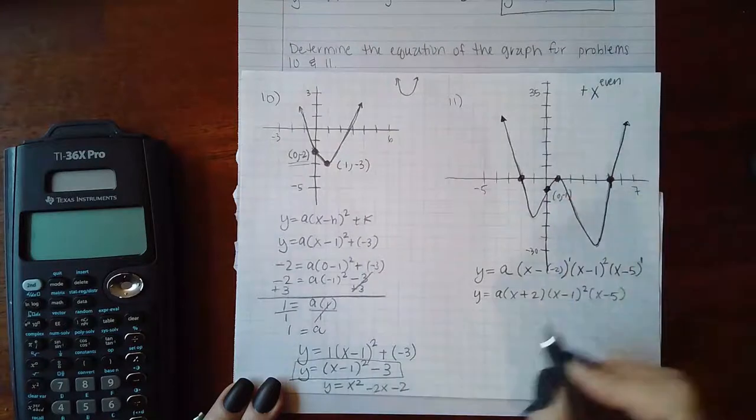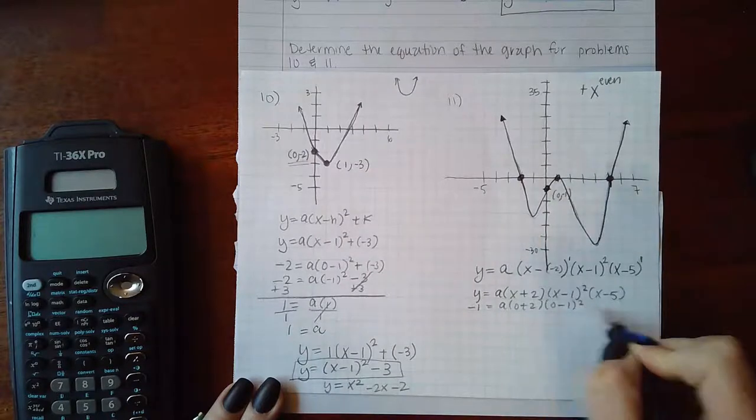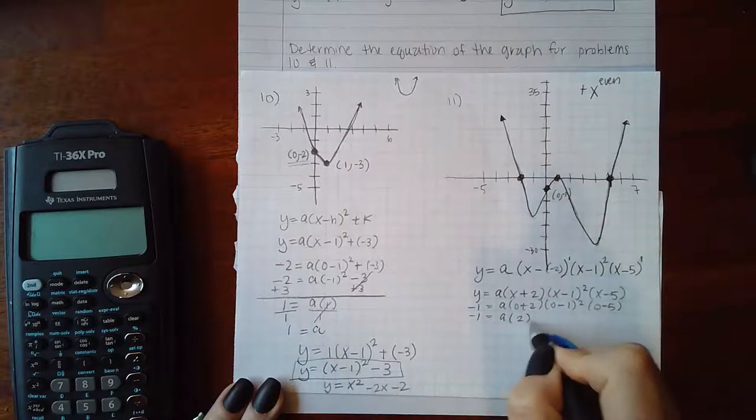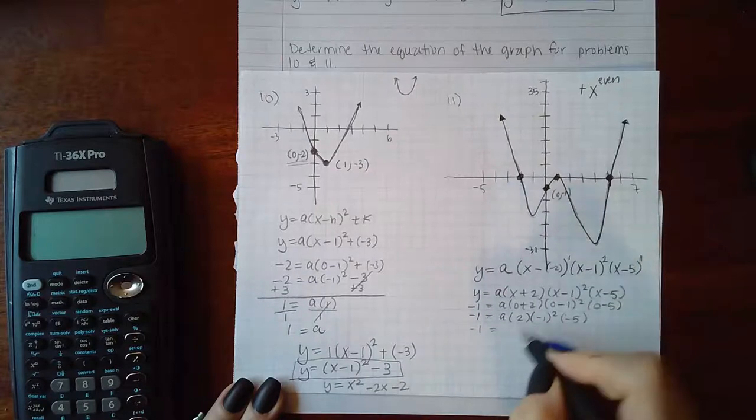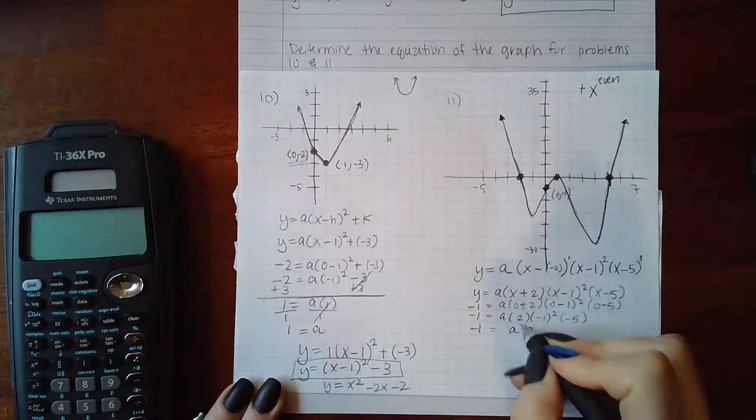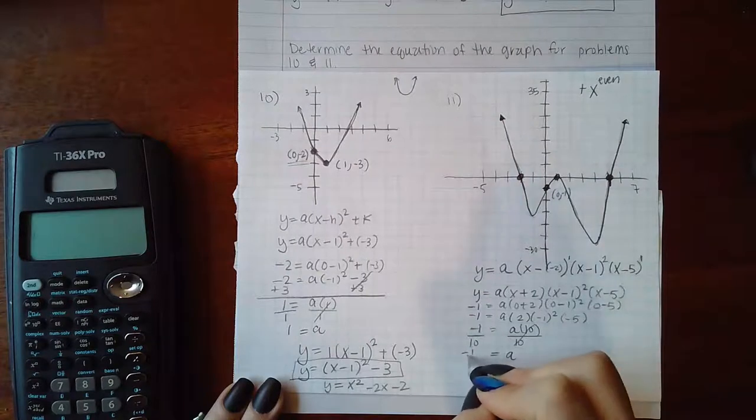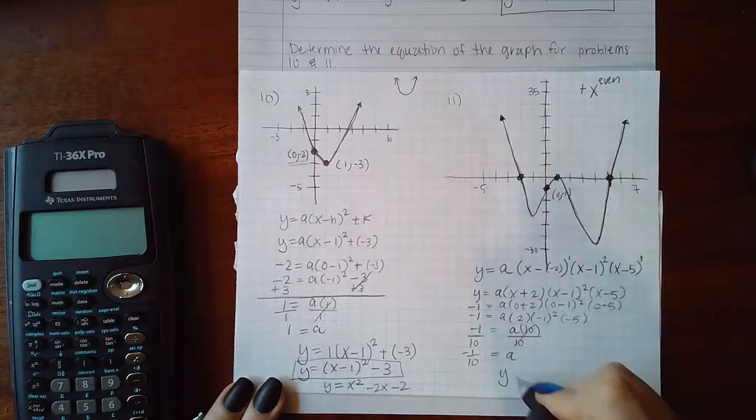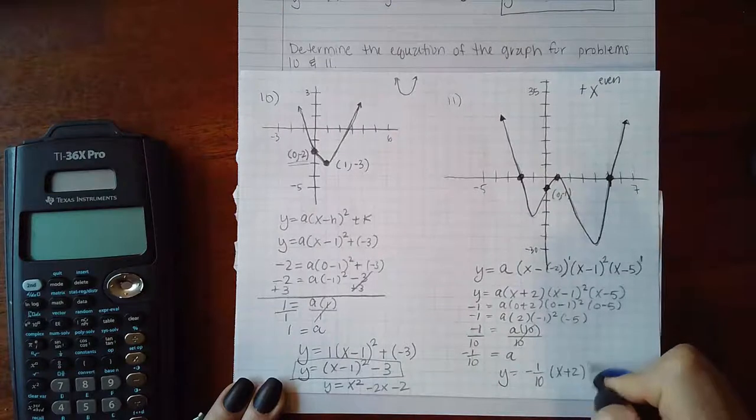I have a y intercept at 0 comma negative 1, so y is negative 1 and x is 0. I get negative 1 equals a times 2 times negative 1 squared times negative 5, which gives me a times 10. If I divide both sides by that factor, I'll get that a equals negative 1/10th.